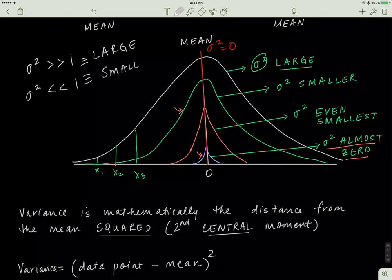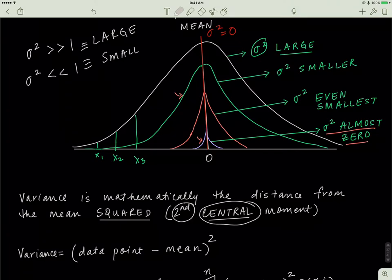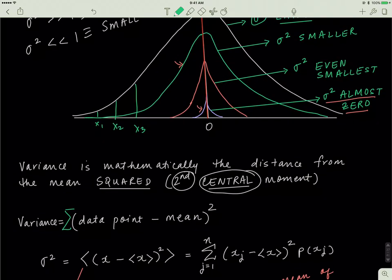Mathematically, how do you define variance? Variance is the distance from the mean, squared — that's what the word 'central' means. The squared comes from the fact that it's the second moment. To find variance, you take your individual data point, subtract the mean, square whatever number you get, and then add up all of those terms.